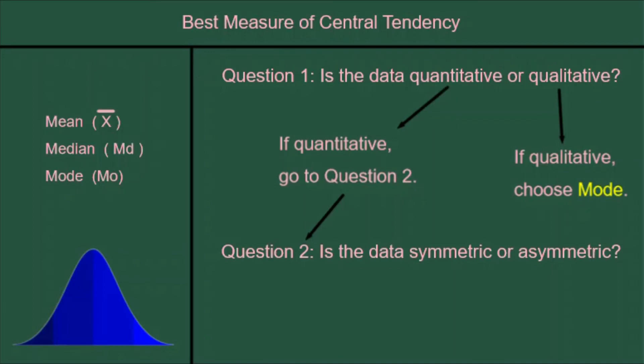Symmetric means the left side is a mirror image of the right side, like in this bell curve. Asymmetric means it is not a perfect mirror image. So if your bell curve is lopsided, it's asymmetric.